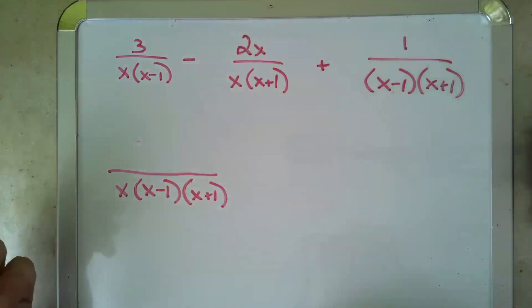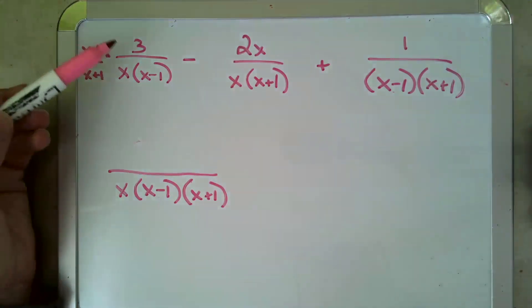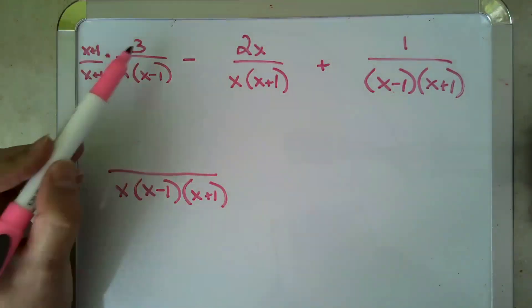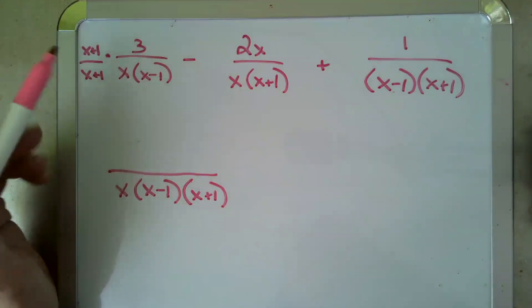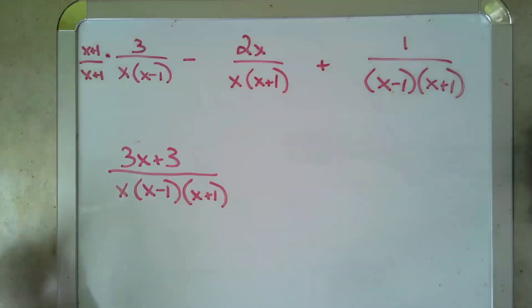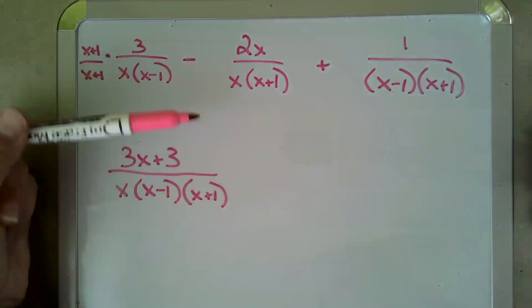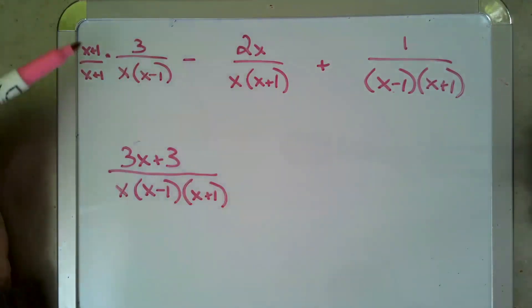And I multiply that to top and bottom because anything over itself is 1, and multiplying by 1 doesn't change the value of the fraction. It just changes the form of it. So if I went ahead and distributed this 3 through my x plus 1, that would give me 3x plus 3 as the new numerator and x times x minus 1 times x plus 1 as the new denominator. But this fraction has the same value as this fraction. It's just changed its form.